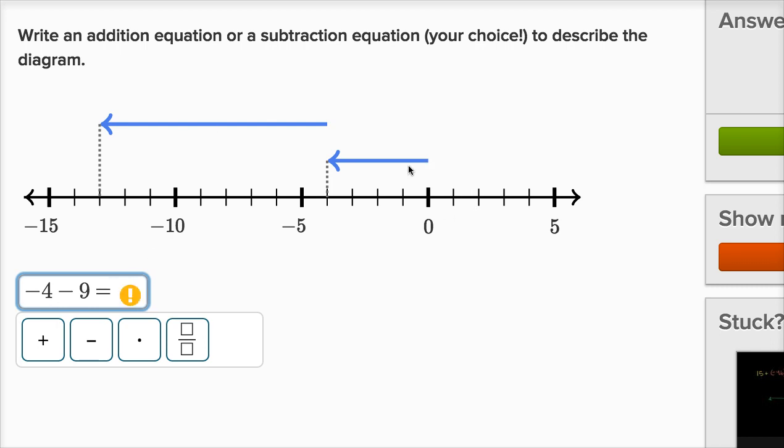And when you go four to the left and then you go another nine to the left, you end up 13 to the left of zero, which is negative 13, equals negative 13. So this way I've written it as a subtraction equation. Negative four minus nine is equal to negative 13.